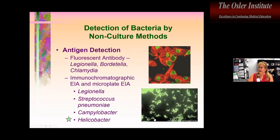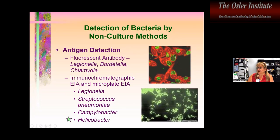Let's talk about non-culture methods. Culture is great and often very sensitive, but sometimes not fast and harder for some organisms. We have both antigen detection and nucleic acid amplification methods. For antigen detection, fluorescent antibody tests are available for detecting Legionella, Bordetella, and Chlamydia in direct specimens — for example, Chlamydia trachomatis inclusions detected using a fluorescent monoclonal antibody, and a Legionella direct fluorescent antibody test performed on bronchoalveolar lavage fluid. Microplate and immunochromatographic enzyme immunoassays are also available for organisms such as Legionella and Streptococcus.